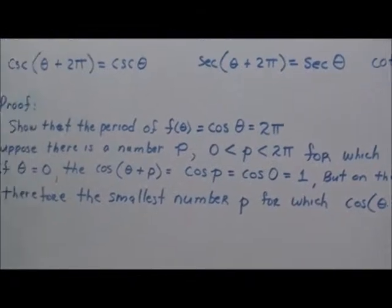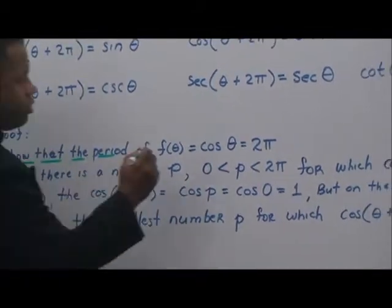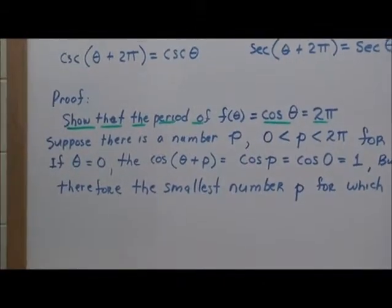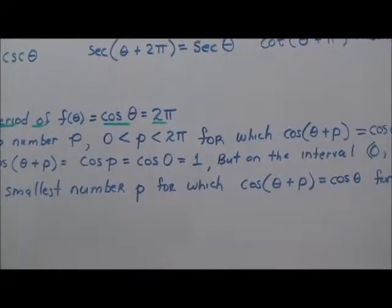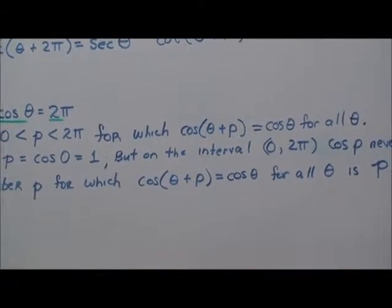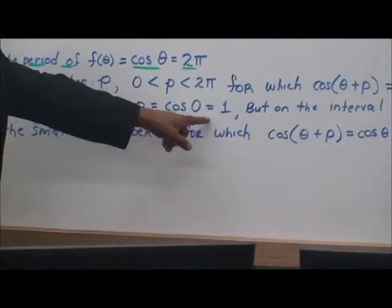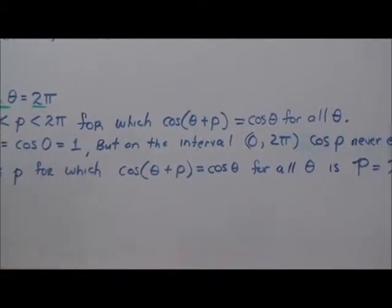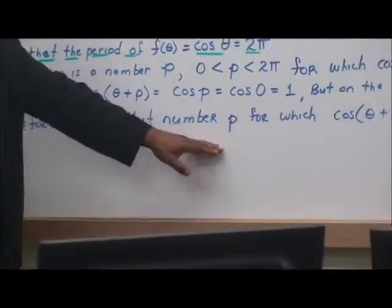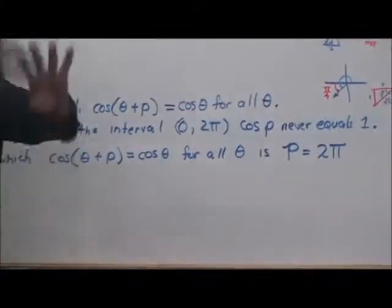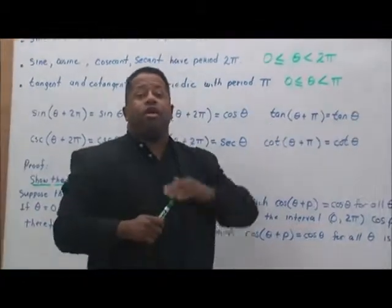Let's look at a quick proof that the period of f(theta) = cosine(theta) is 2 pi. Suppose there is a number P with 0 < P < 2π for which cosine(theta + P) = cosine(theta) for all theta. If theta equals zero, then cosine(P) = cosine(0) = 1. But in the interval from 0 to 2π, cosine P never equals 1. Therefore, the smallest number P for which cosine(theta + P) = cosine(theta) for all theta is P = 2π. More will be covered in future videos.